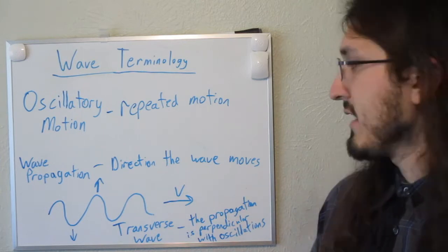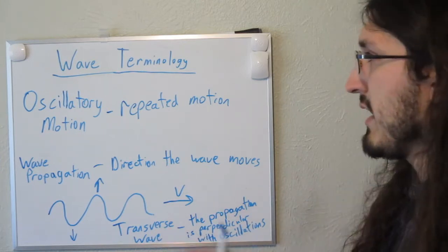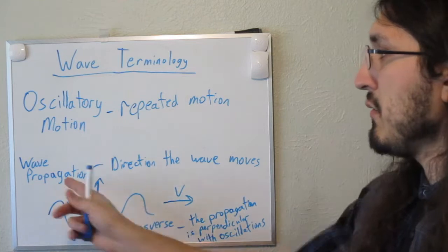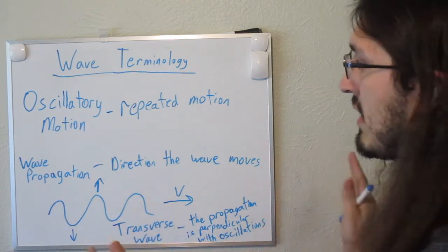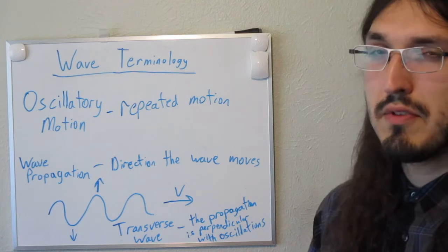There is another type of wave that doesn't move like a transverse wave where the oscillations are parallel with the propagations, which means they both move in the same direction, and that's called the longitudinal wave.